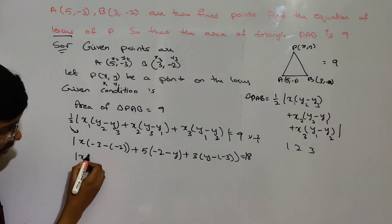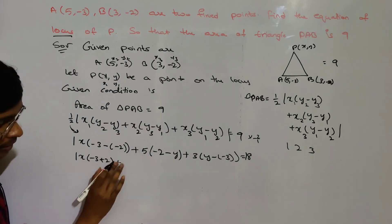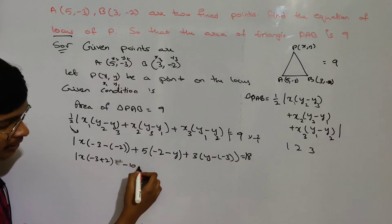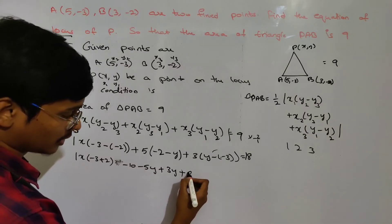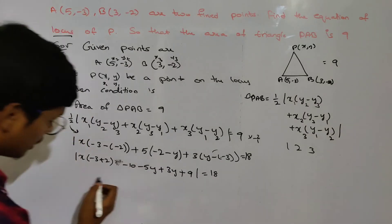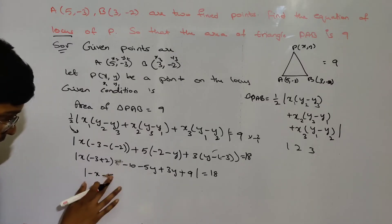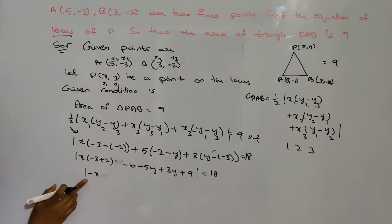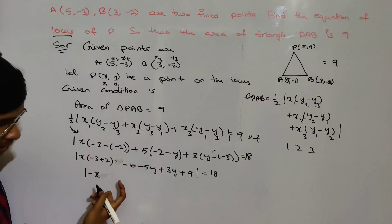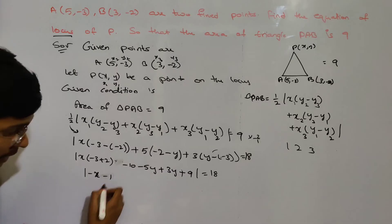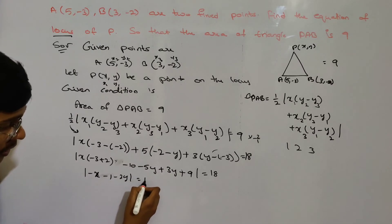After substituting the coordinates, we get: modulus of x(-3 + 2) plus (-10) minus 5y plus 3y minus 2y, which simplifies. We get: -x minus 10 plus 9 minus 5y plus 3y minus 2y equals 18.